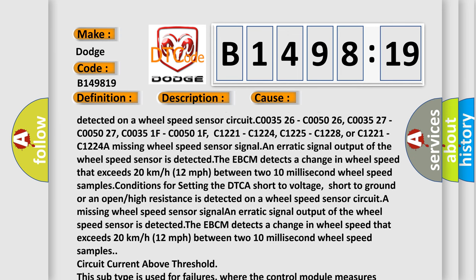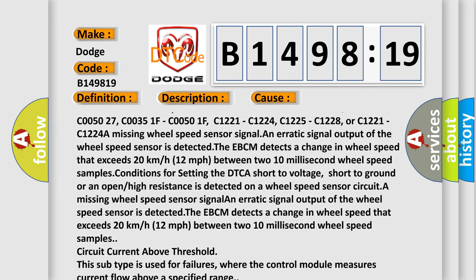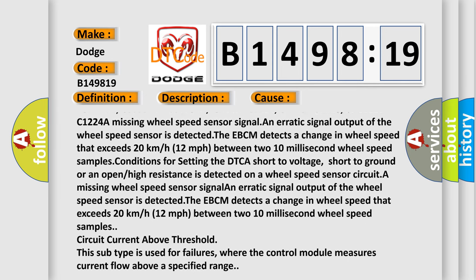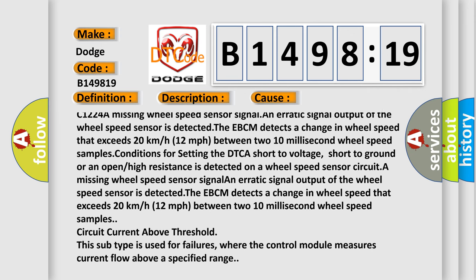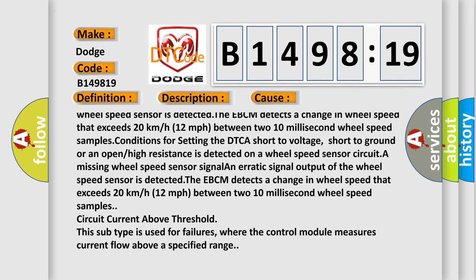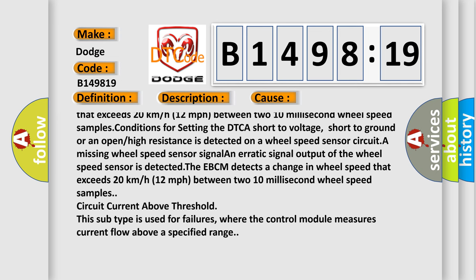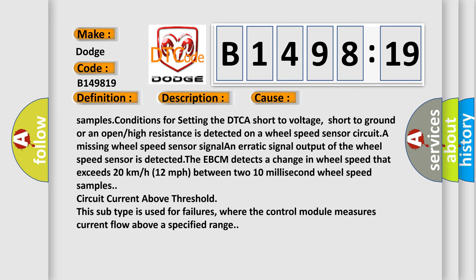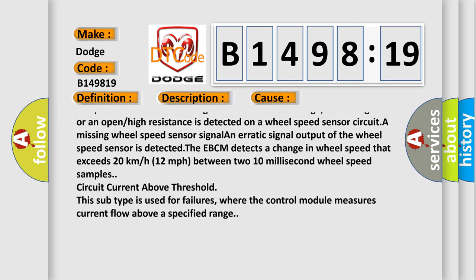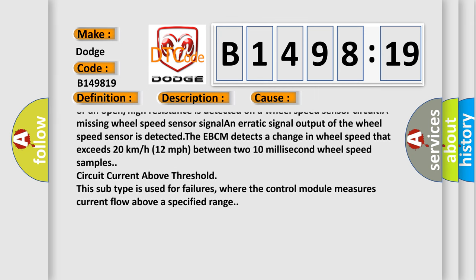C003526, C005026, C003527, C005027, C00351F, C00501F, C1221, C1224, C1225, C1228, or C1221, C1224. A missing wheel speed sensor signal and erratic signal output of the wheel speed sensor is detected. The EVCM detects a change in wheel speed that exceeds 20 kilometers or 12 miles per hour between two 10 millisecond wheel speed samples.